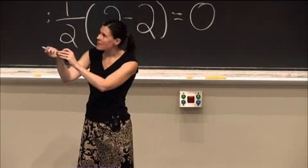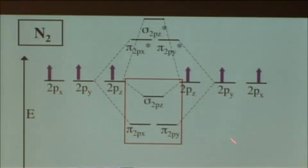Let's fill it out in this way, keeping in mind that we're going to fill up the pi 2p's before the sigma. We have a total of 2, 4, 6, 8, 10 valence electrons, so I'll make sure I count to 10 as we fill up our molecular orbitals here.